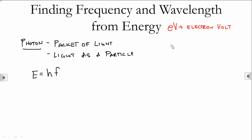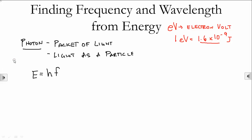We're measuring energy in electron volts. One electron volt is just 1.6 times 10 to the negative 9 joules. An electron volt is a measurement of energy just like joules is — it just happens to be extremely small so that it fits the scale of what we're talking about.